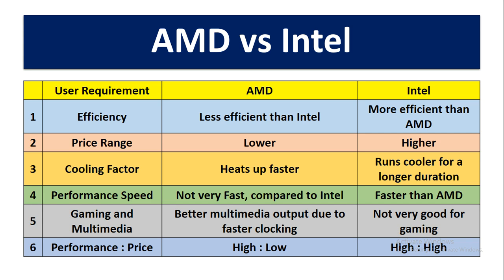And coming to this cooling factor, AMD heats up very faster but Intel runs cooler for a longer duration. And for performance speed, AMD processor is not very fast when compared with Intel processor, and Intel processor is faster than AMD processor.